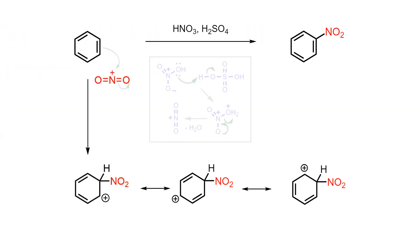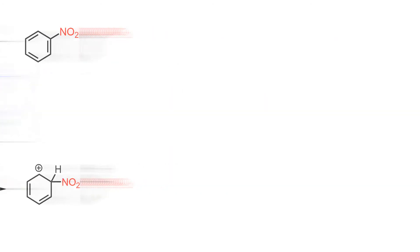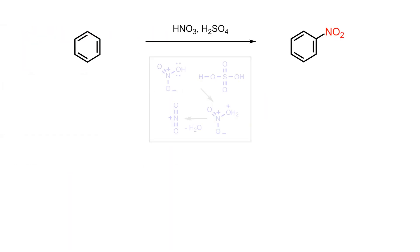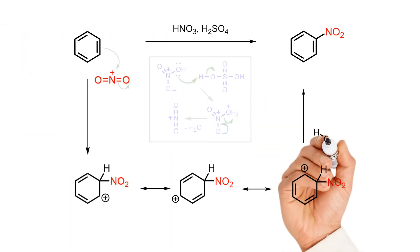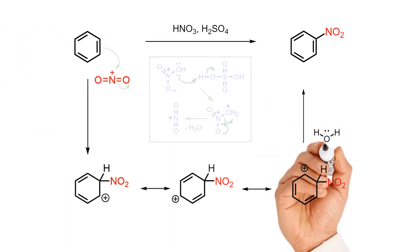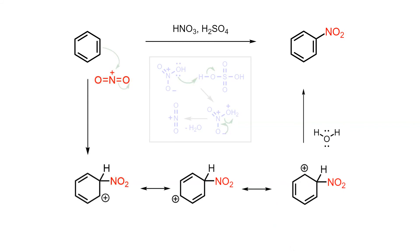The carbocation intermediate is viable due to its ability to delocalize the electron deficiency across the sigma complex pi system. While delocalization assists in stabilizing the intermediate, this is still an unstable species that is missing a pair of electrons.